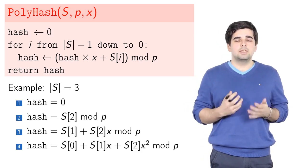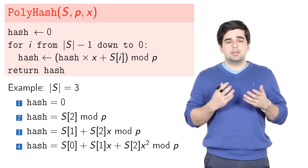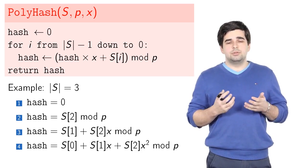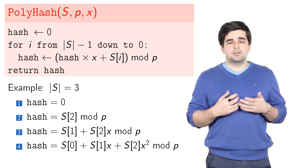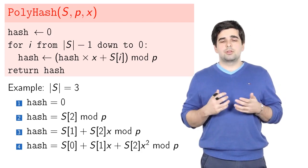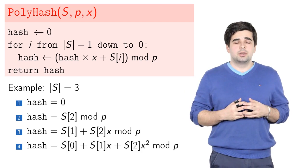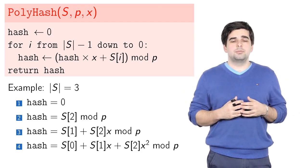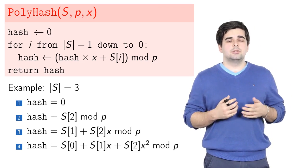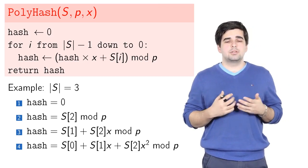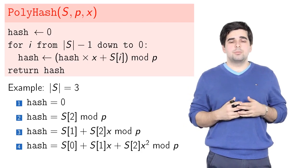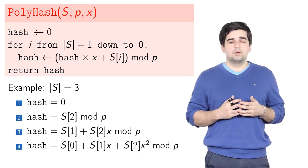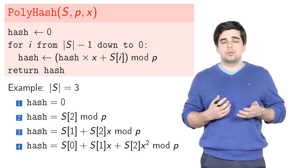We start with a hash value of 0 and then we start with i equal to 2 if the length of our string s is 3. We start with |s|-1, which is 2. We have current value of hash equal to 0, so we multiply this 0 by x and get 0. Then we add the value of s[i], which is s[2], and take it modulo p. After the first iteration of the for loop, we get s[2] mod p.